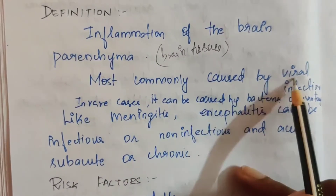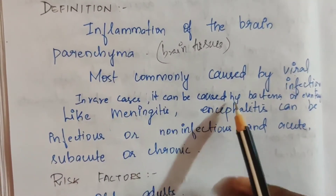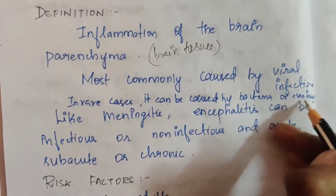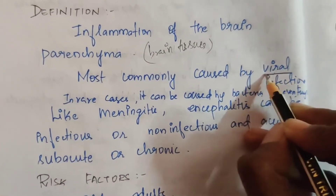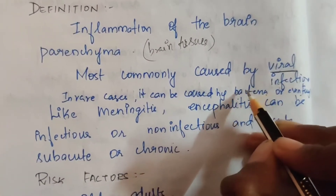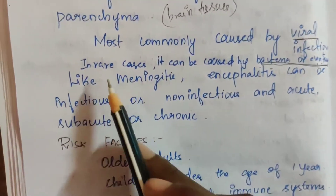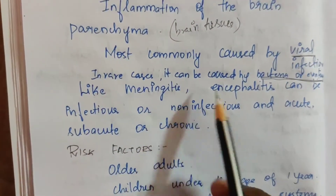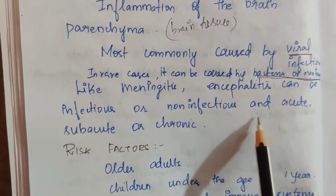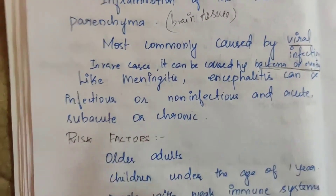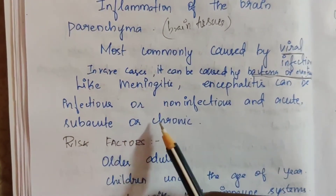Encephalitis is mostly caused by viral infection. In rare cases, it is caused by bacteria or fungi. Like meningitis, encephalitis can be infectious or non-infectious, and acute, subacute, or chronic.